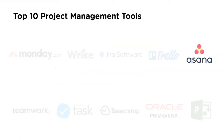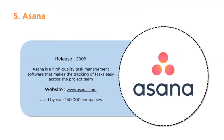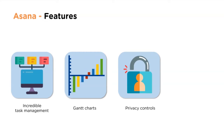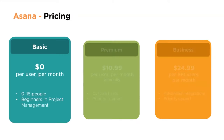Asana was released in 2008. It is a high-quality task management software that makes tracking tasks easy across project management. The website is www.asana.com, used by over 140,000 companies. Features include incredible task management, Gantt charts, privacy controls, and easy progress tracking.